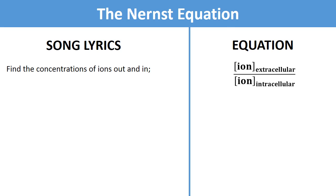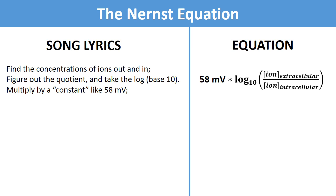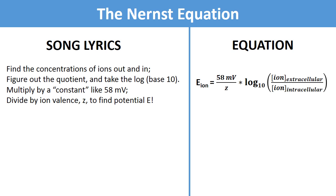Find the concentration of ions out and in, figure out the quotient and take the log base 10, multiply by a constant like 58 mV, divide by ion valency to find potential.